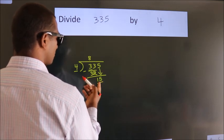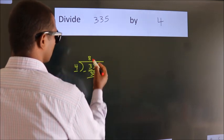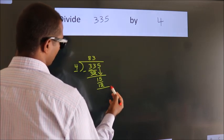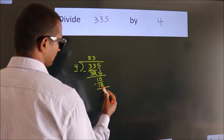A number close to 15 in the 4 table is 4 times 3, which is 12. Now we subtract. We get 3.